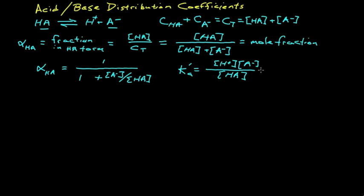Now, we would like the ratio of A minus over HA. Let's rearrange this. A minus over HA is just KA prime divided by H plus.